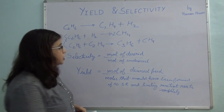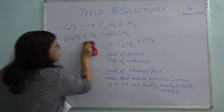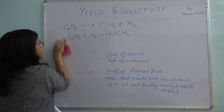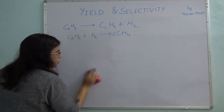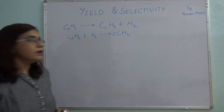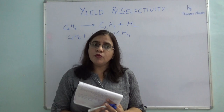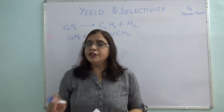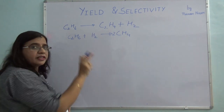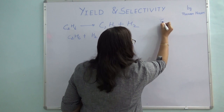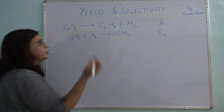Now if you have two reactions taking place, let's use these two equations. From the last video, we saw that to find the number of moles of product formed, we use the concept of extent of reaction. With two reactions, you can define two extents of reaction: zeta 1 for the first reaction and zeta 2 for the second. Let me also mark my components: this is component 1, 2, 3, and 4.